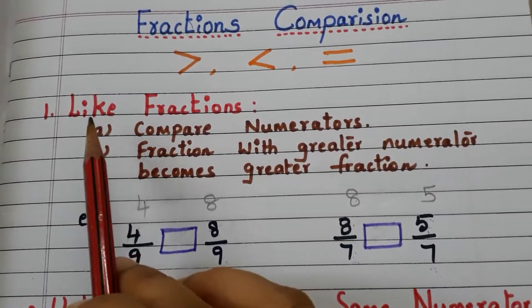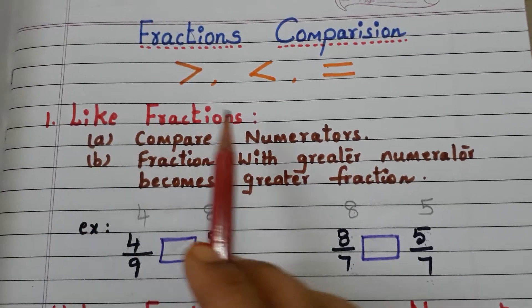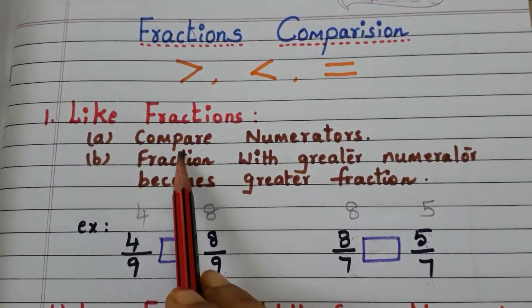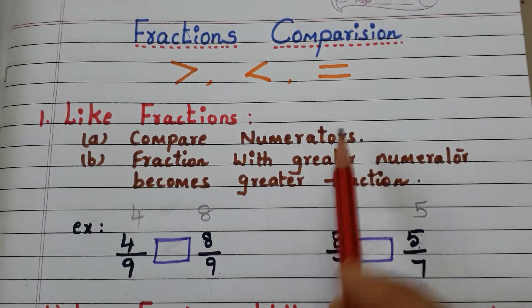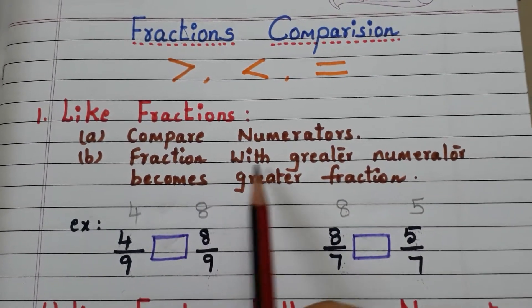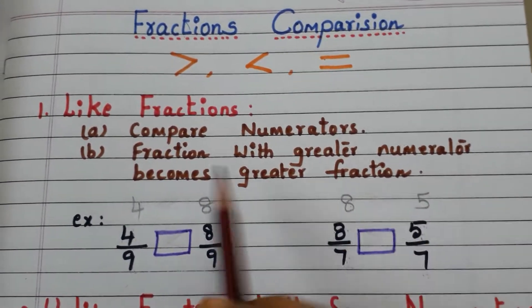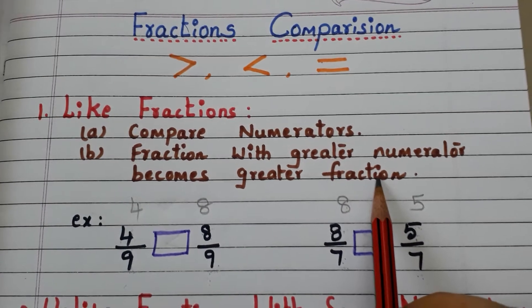First we start with like fractions. When like fractions are to be compared, first we have to compare the numerators. The fraction with the greater numerator becomes the greater fraction.